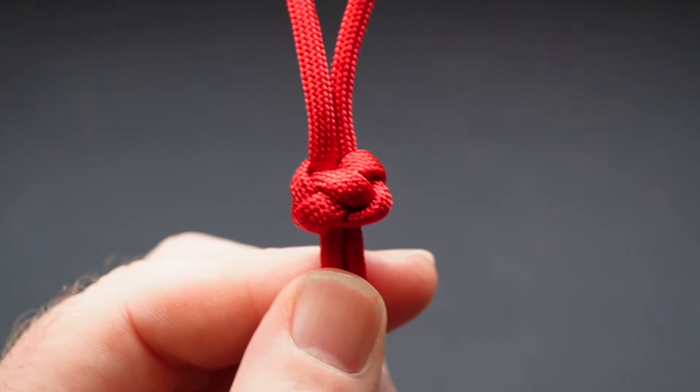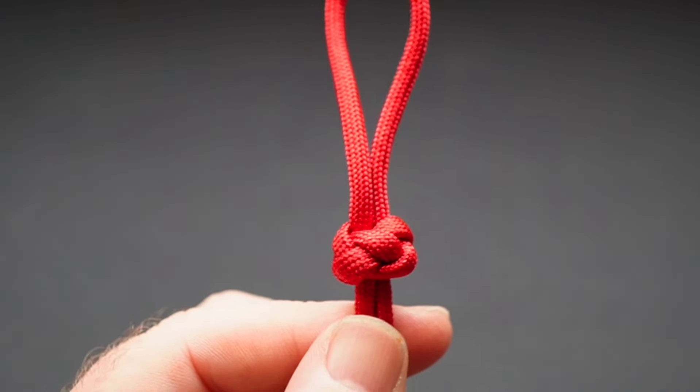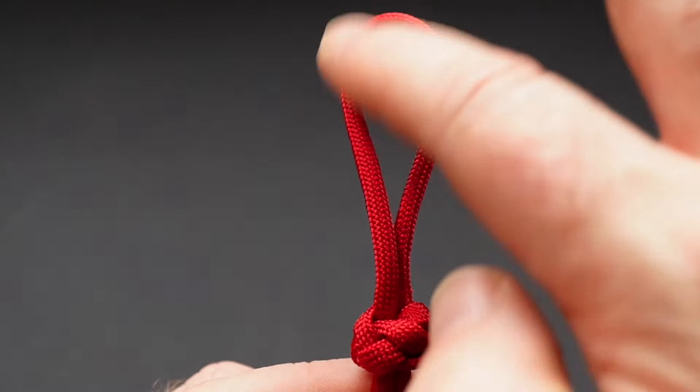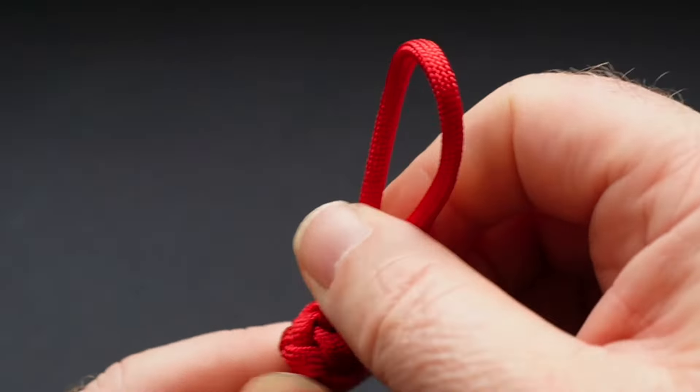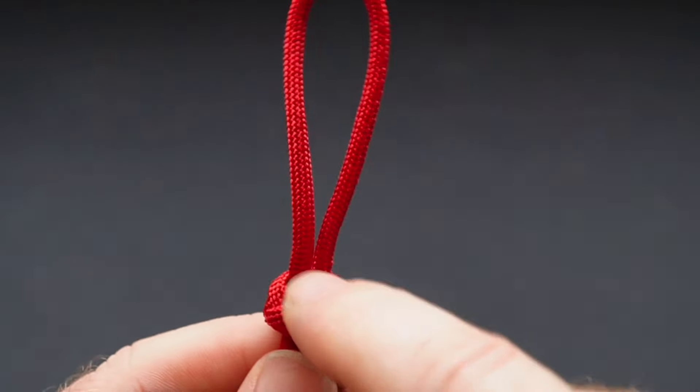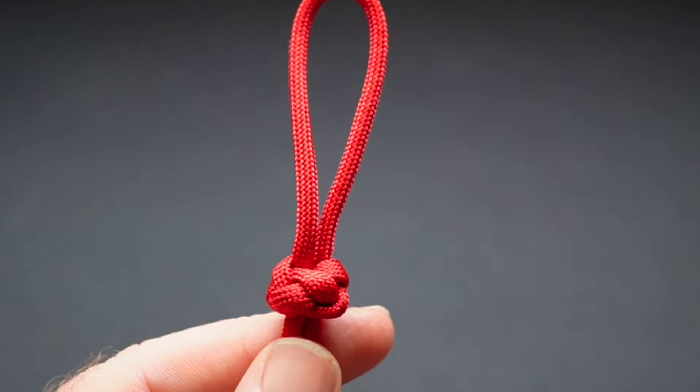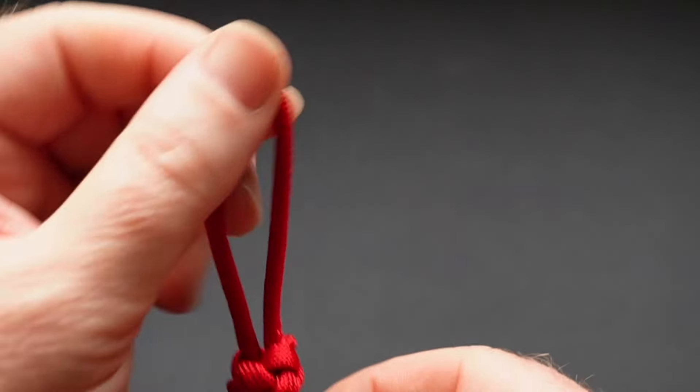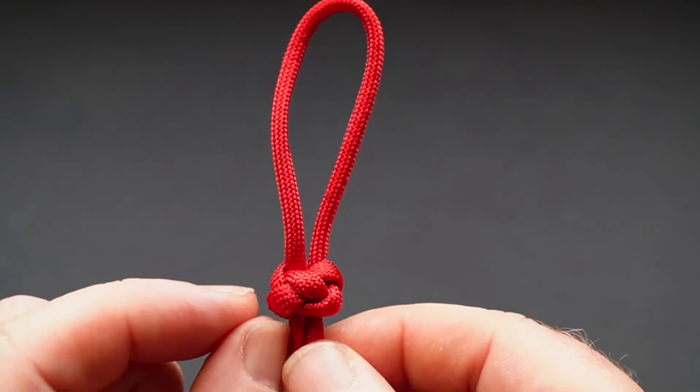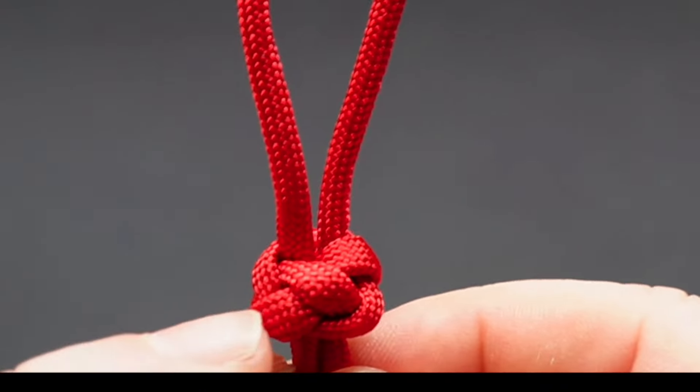There they are. I've made the diamond actual diamond knot, but look, this loop is really huge. So what is the easiest way to reduce this loop? Well, the answer is I grab this left hand lobe here and I just pull it on a bit.